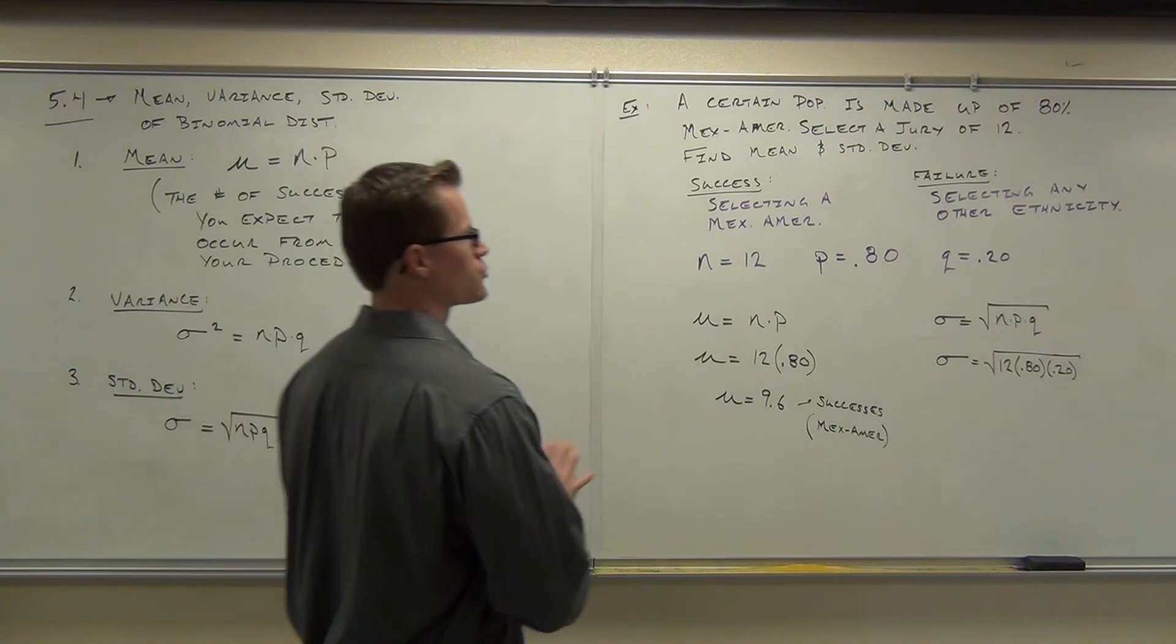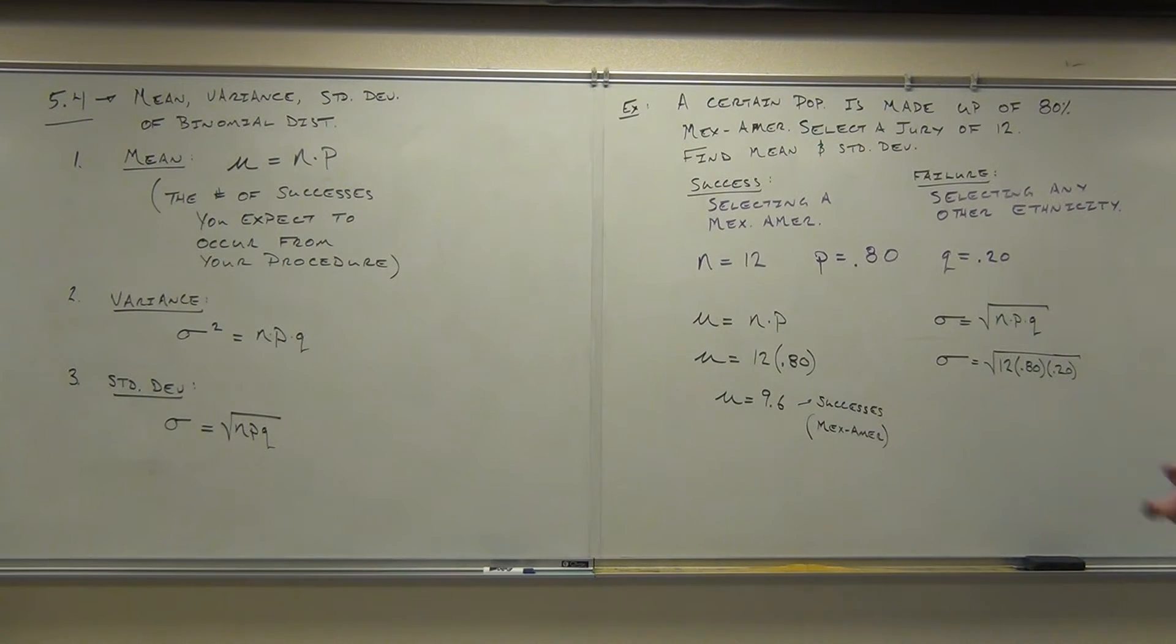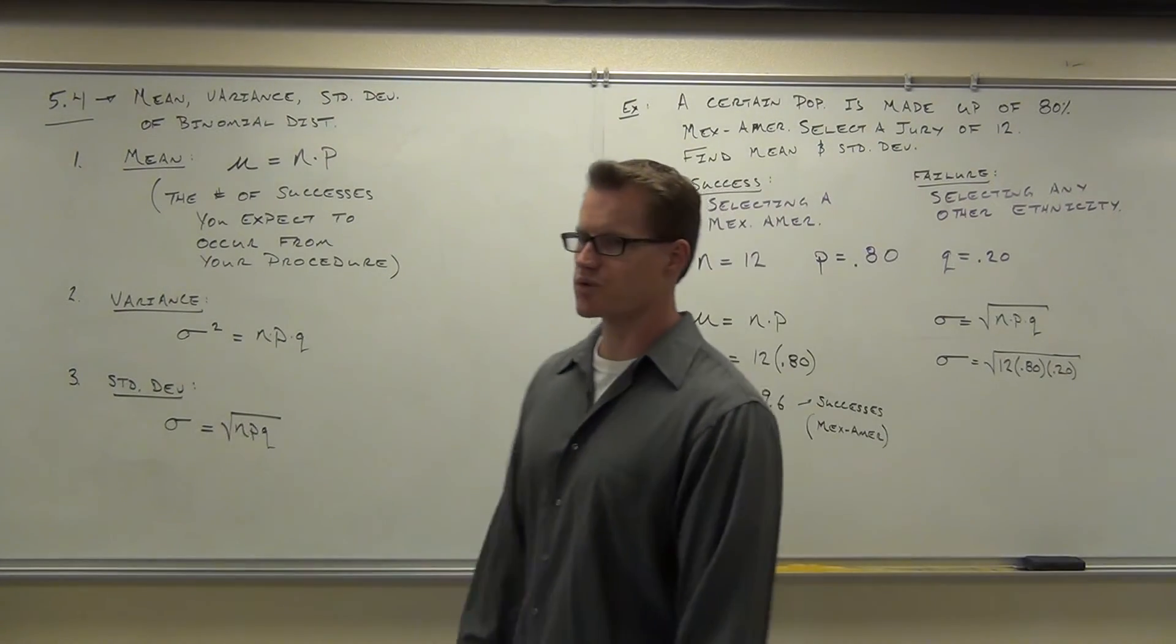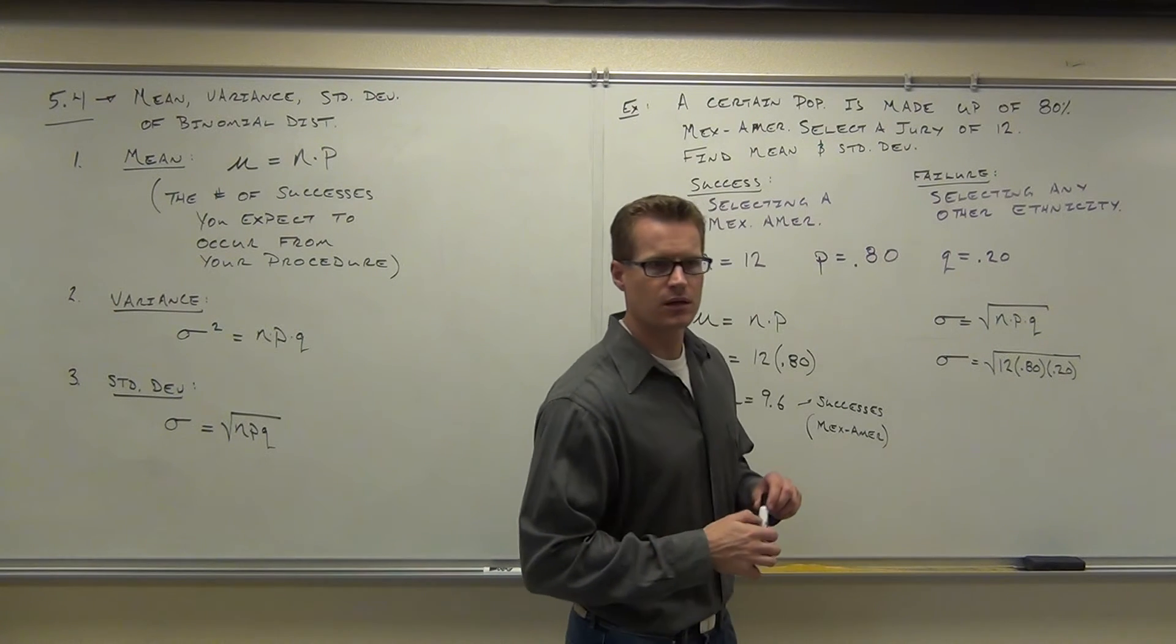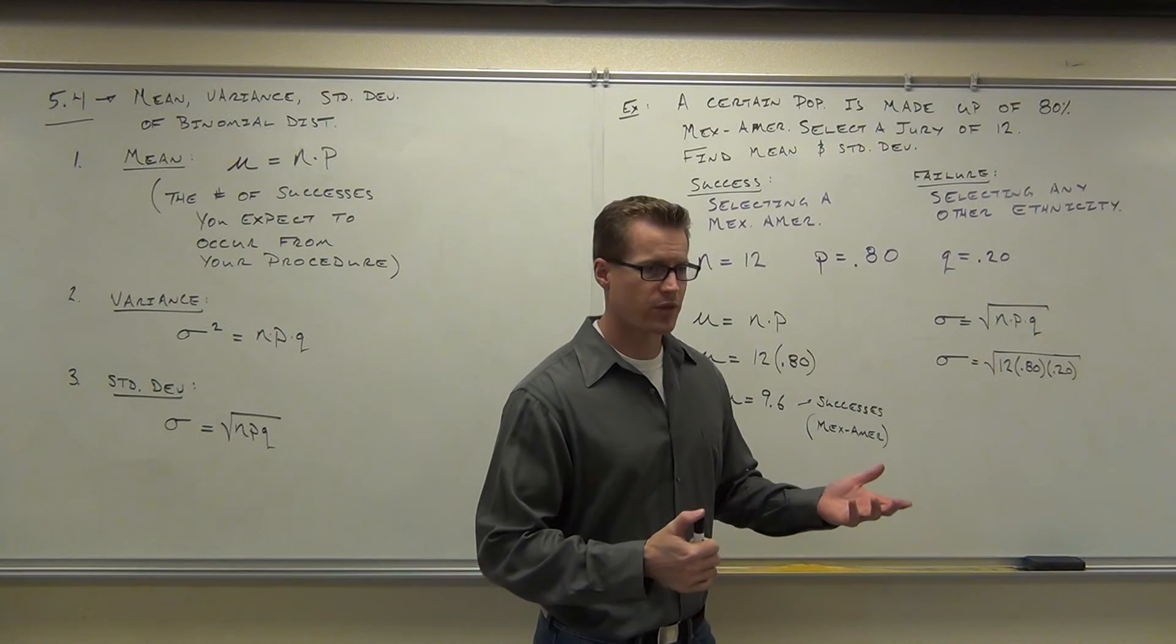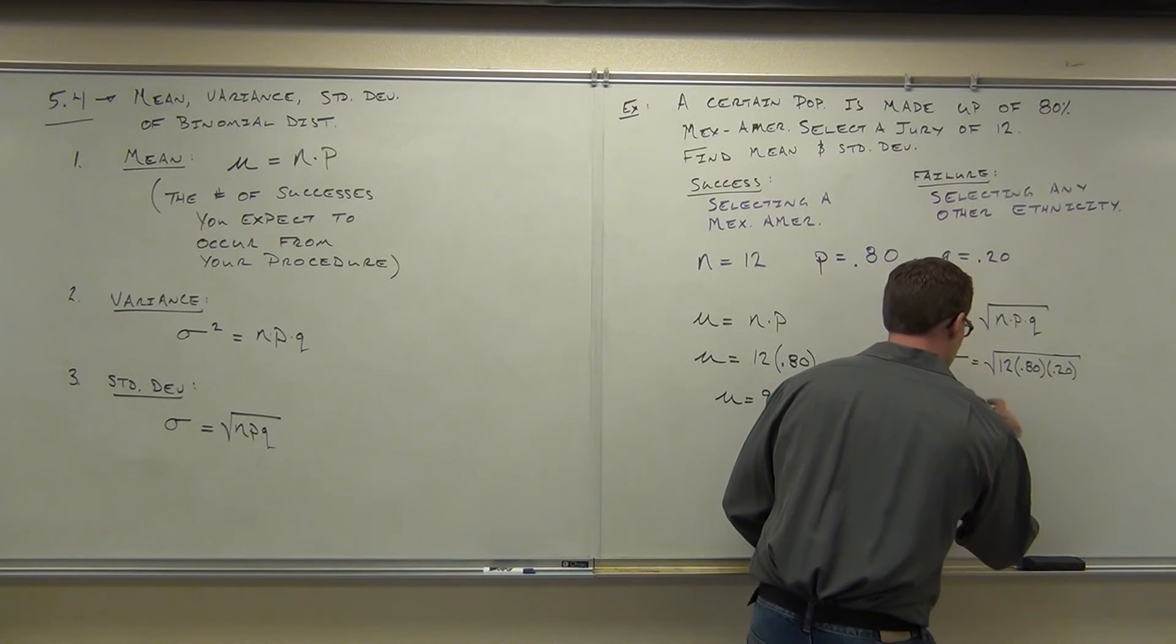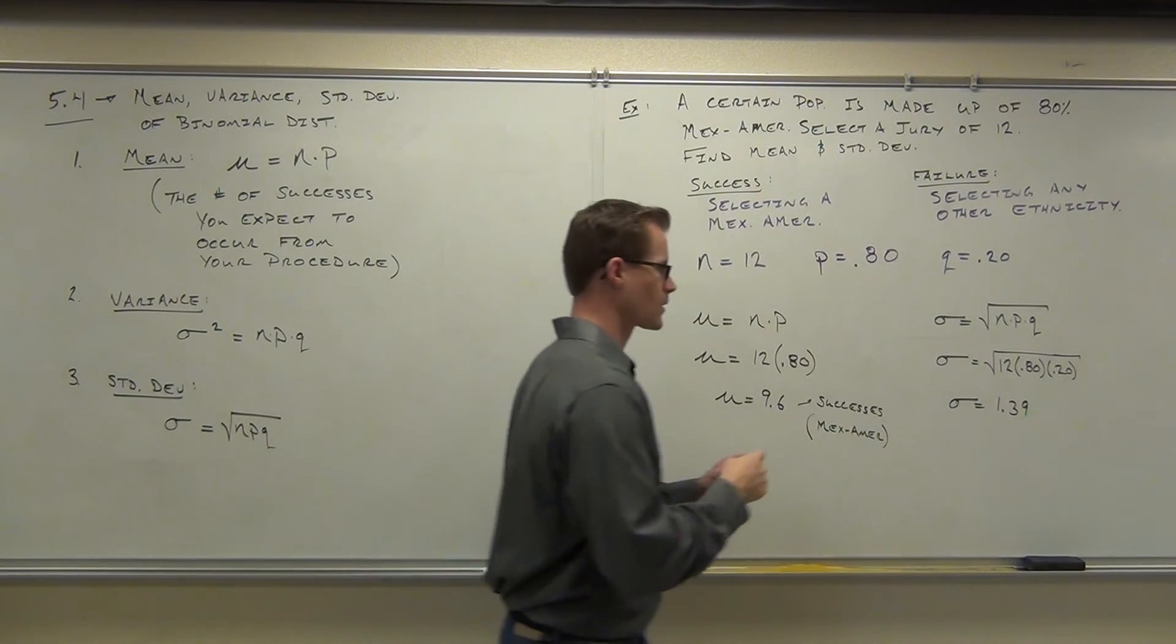So our n was 12, that's how many trials, p was .80, that's probably the success for each trial, q is .20, of course those are complementary with p, so we multiply all those things together, then you take a square root of it, and how much did you get? 1.385. So 1.39, did you all get 1.39?